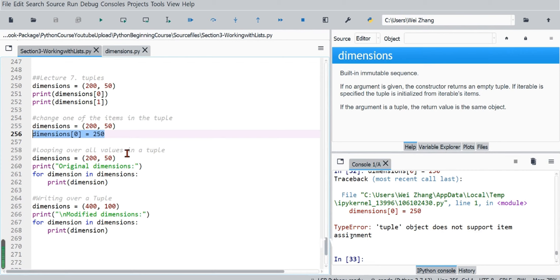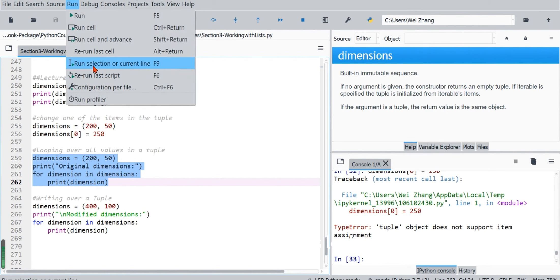We can loop over all values in a tuple. We print 'Original dimensions:' with a colon, then with a for loop, for dimension in dimensions, print each value. We can run this block of code.